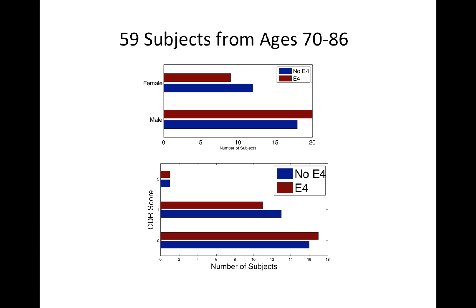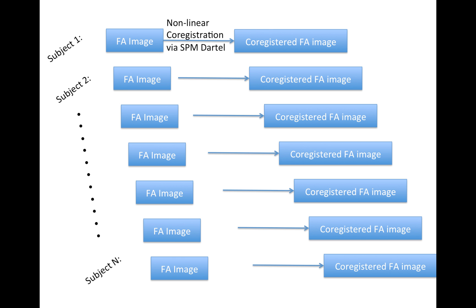We have a distribution of subjects with different clinical dementia ratings. So 0 is normal and 2 is very demented, but you can see we have a distribution of them. And for each of these subjects, we have the FA images I talked about before.